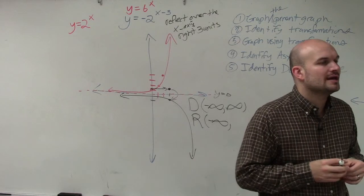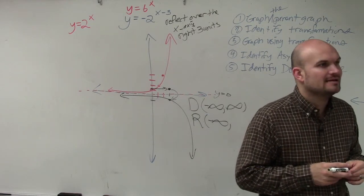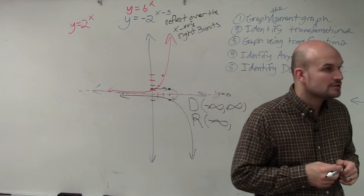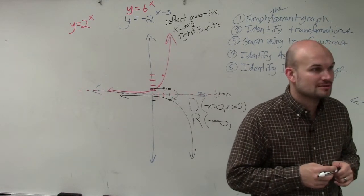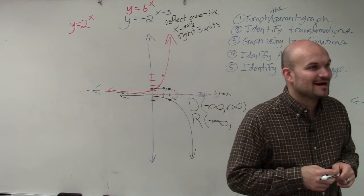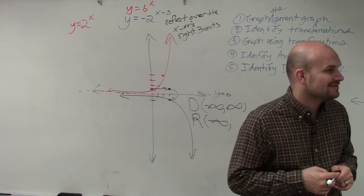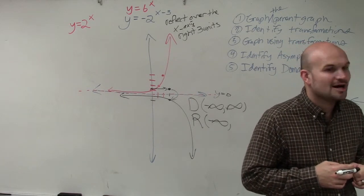An asymptote is a line that the graph is going to—it starts with an A and it rhymes with approach. Approach. It's where the graph approaches.